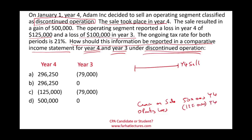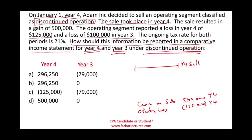Also in Year 3, which is the prior year, we operated the business and had a loss from operations of $100,000. Adam did a great job selling this business for half a million because it had been operating at a loss for the past two years. We sold it at a gain.